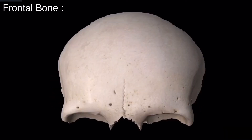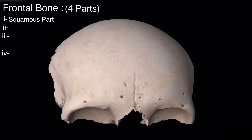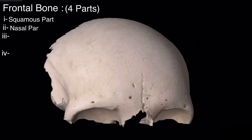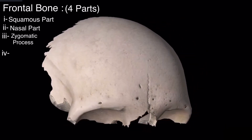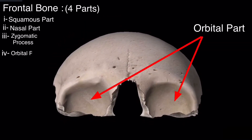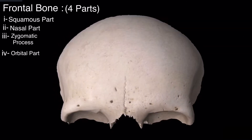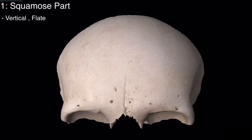The frontal bone consists of four parts: the squamous part, the nasal part, the zygomatic process, and the orbital part. Now let's begin with the squamous part.